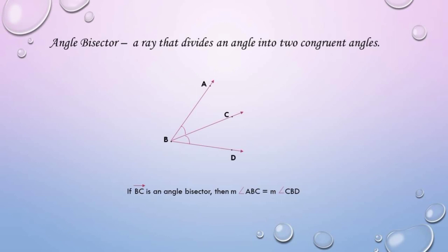Then we have the angle bisector — a ray that divides an angle into two congruent angles. If ray BC is an angle bisector, then the measure of angle ABC is equal to the measure of angle CBD.